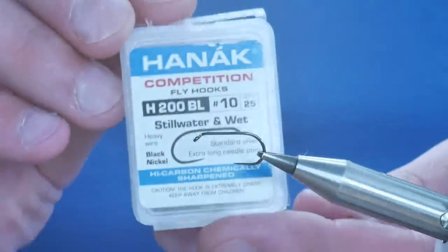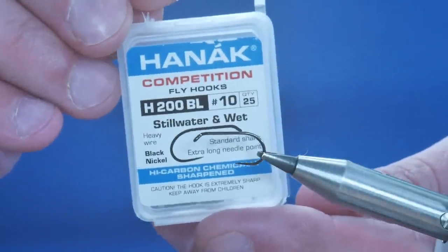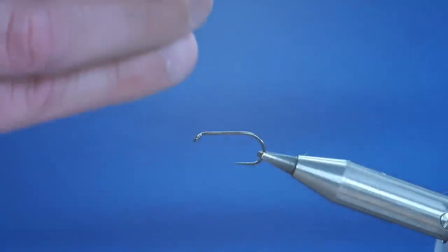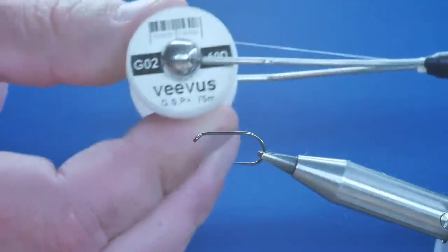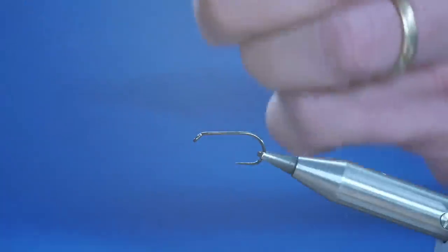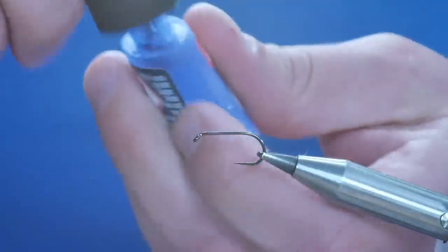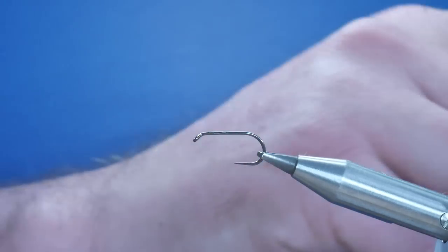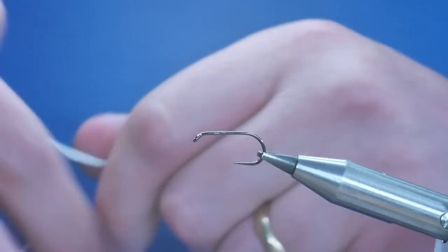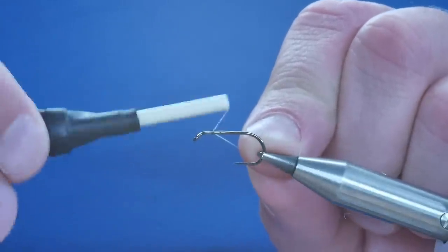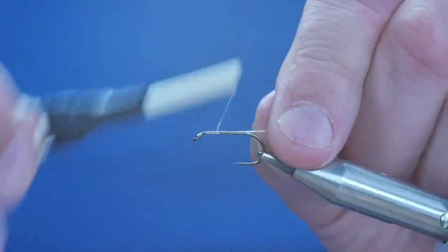So in the hook I have a Hanak H200 barbless hook in size 10, and the thread I'm going to be using today is the Vivas 50 denier in clear white thread. As always with the Vivas, first port of call is the super glue. I'm just going to give the shank a little touch and cast my thread on about a millimeter or so back from the eye.